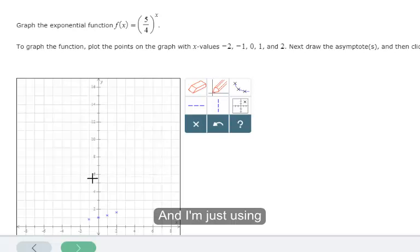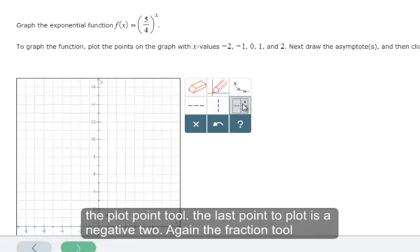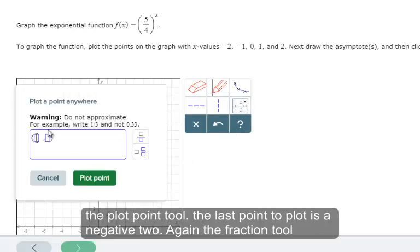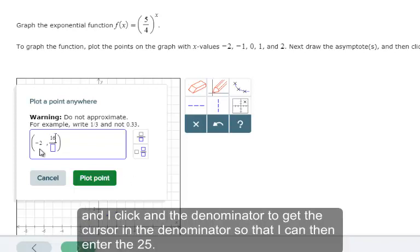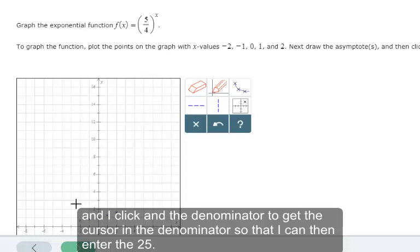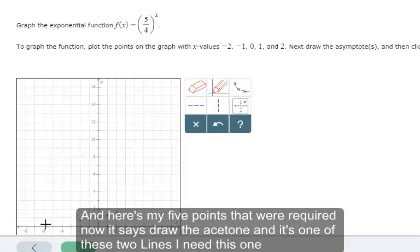I'll just quickly enter these other points to show you how that's done. And I'm just using the plot point tool. The last point to plot is a negative two. Again, the fraction tool. And I click in the denominator to get the cursor in the denominator so that I can then enter the 25.